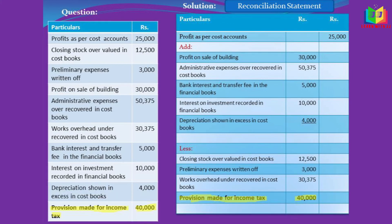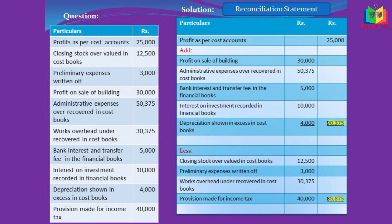The last item is provision made for income tax. This provision is a financial expense and is shown only in the financial book, so in the cost book it is not stated — understated expenses. This will increase the profit, so in order to rectify that, we will subtract this.